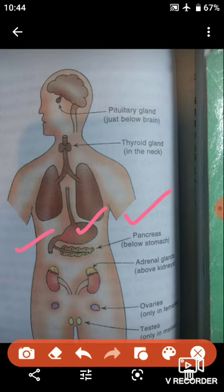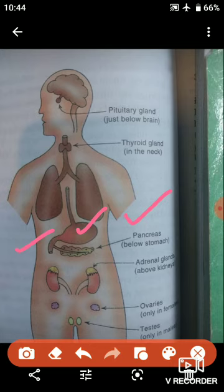A diabetic person should take less sugar in their diet, as advised by the doctor. Diabetes can be managed by controlling diet, reducing weight, doing regular physical exercises, and taking medicines. Persons having severe diabetes are treated by giving injections of insulin.